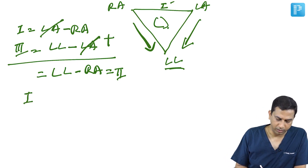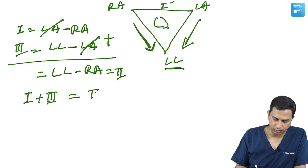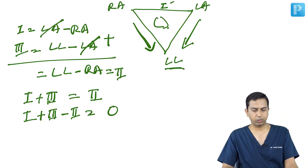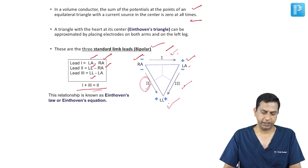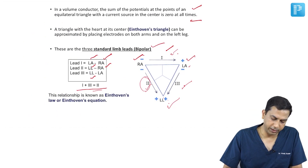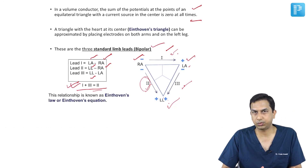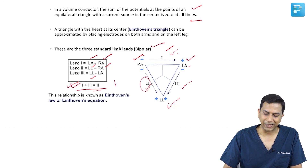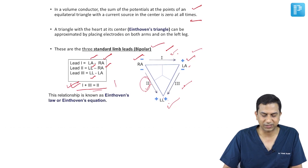This is Einthoven's law and the Einthoven equation. Remember: the equation is not Lead 1 plus Lead 2 equals Lead 3 — it is Lead 1 plus Lead 3 equals Lead 2. This can make a good exam question, and you may be asked about Einthoven's law and the Einthoven equation.